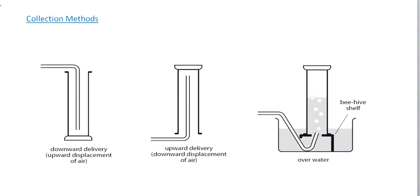Let's speak about certain types of collection methods. The first method is called downward delivery, or the upward displacement of air. If we have a dense gas entering the container, the dense gas will sink to the bottom and displace air upwards. That is why we call it the upward displacement of air, or downward delivery.